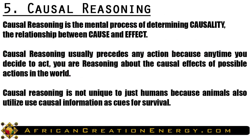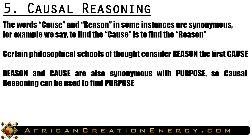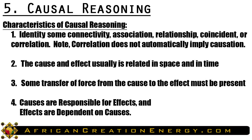The fifth form of reasoning we want to discuss is called causal reasoning — the mental process of determining causality, the relationship between cause and effect. Causal reasoning usually precedes any action, and is not unique to humans because animals also utilize causal information as cues for survival. The words cause and reason are in some instances synonymous: to find a cause is to find a reason. Reason and cause are also synonymous with purpose, so causal reasoning can be used to find purpose. The first step is to identify some connectivity, association, relationship, coincidence, or correlation between two or more things.